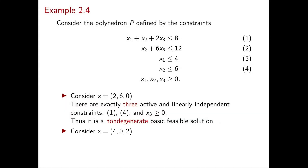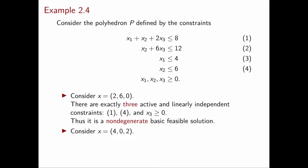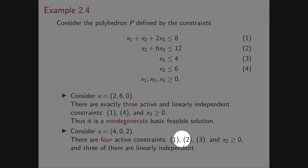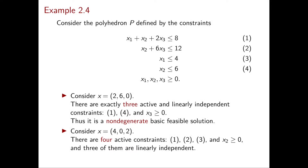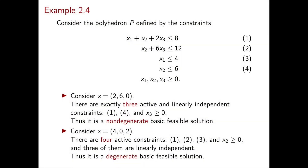On the other hand, consider the vector x = (4, 0, 2). You can check all the inequalities and see that there are four active constraints: 1, 2, 3, and x2 ≥ 0. Among these four constraints, three of them are linearly independent, which implies that x is a basic feasible solution, but it's also degenerate because the active constraints are 4 instead of 3.